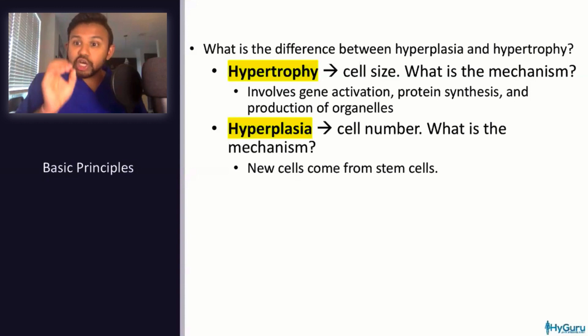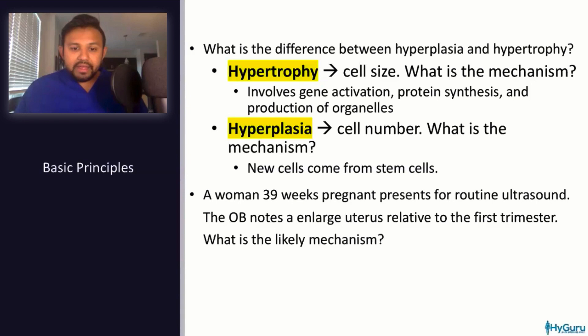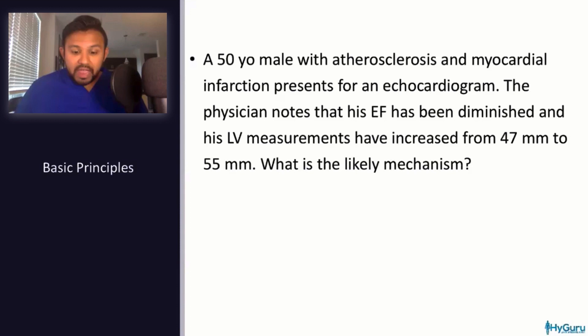Vignette: a 39-weeks pregnant woman presents for routine ultrasound. The OB notes an enlarged uterus relative to the first trimester. The mechanism is that the uterus has undergone both hyperplasia and hypertrophy — hyperplasia because of elevated estrogen and progesterone during pregnancy.